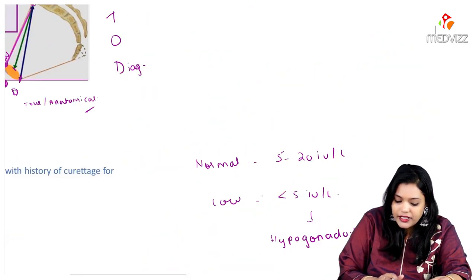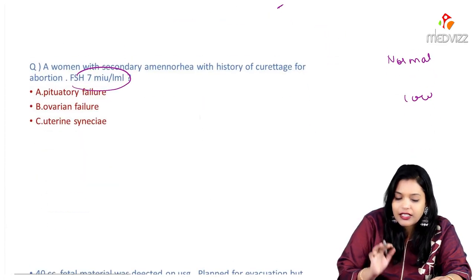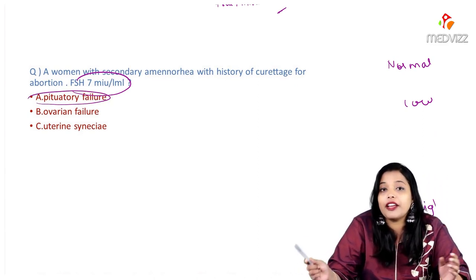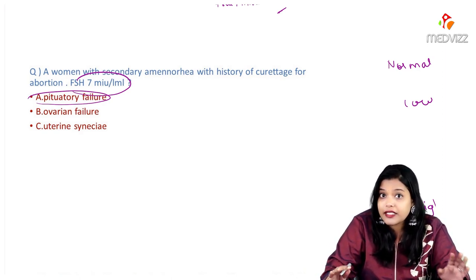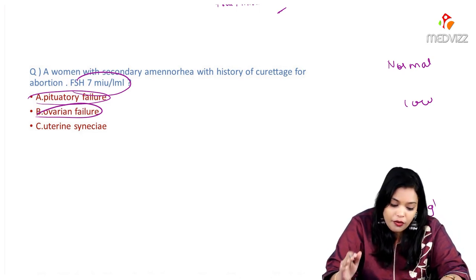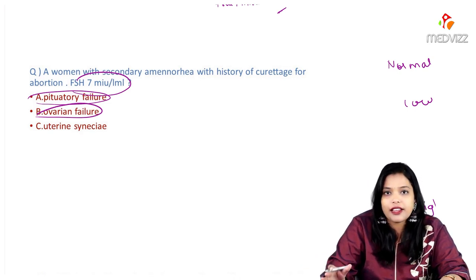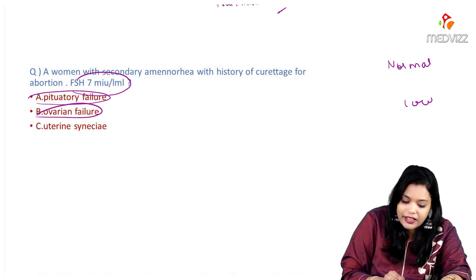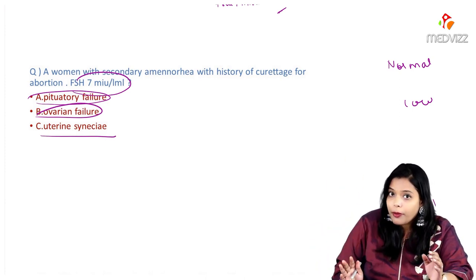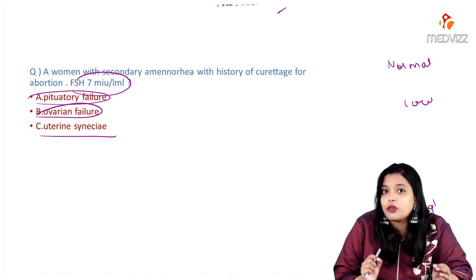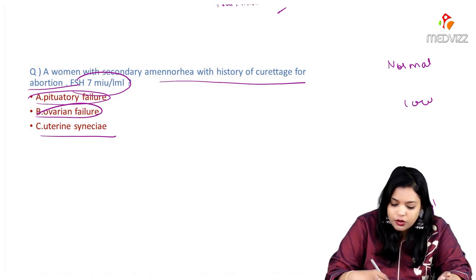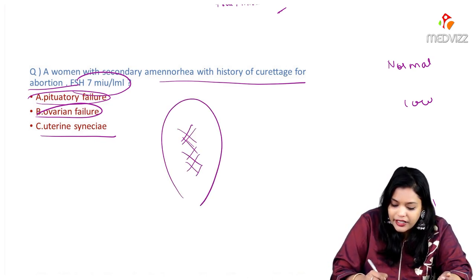Hypogonadotrophic hypogonadism indicates hypothalamo-pituitary failure, whereas hypergonadotrophic hypogonadism is suggestive of ovarian failure. Premature ovarian failure is when FSH is more than 40 IU/L on two occasions six weeks apart. In this question, FSH is 7 — that is normal — so it cannot be pituitary failure (which needs FSH less than 5) or ovarian failure (which needs FSH more than 20). The history of curettage directs us towards uterine Asherman's syndrome.